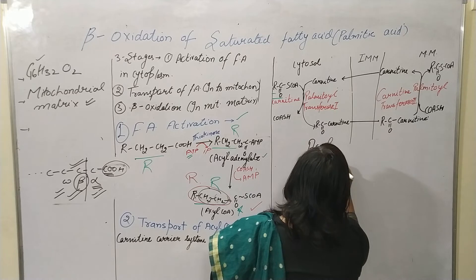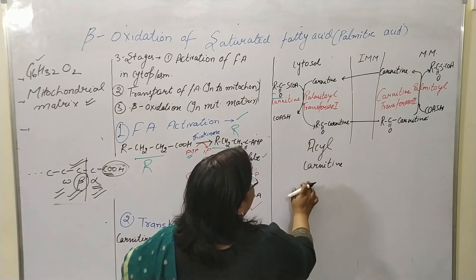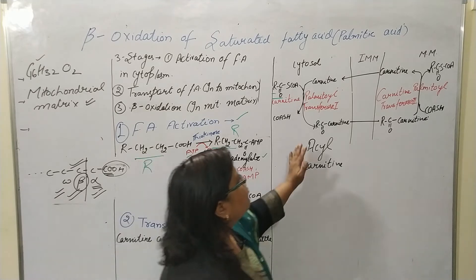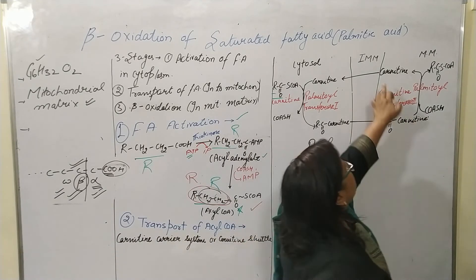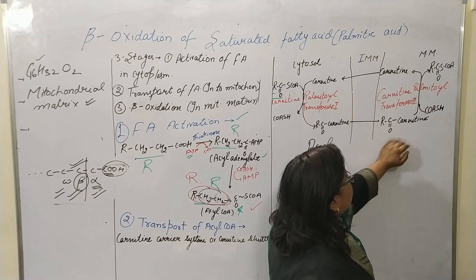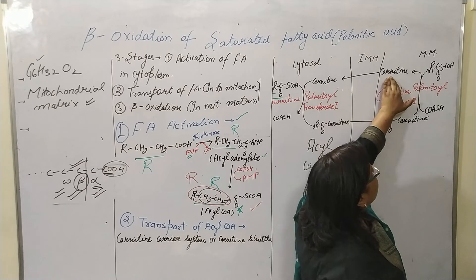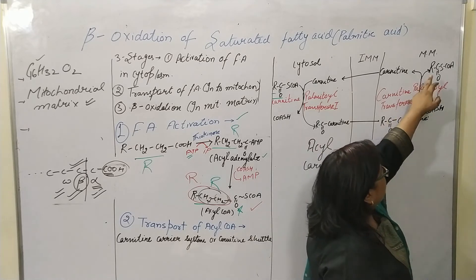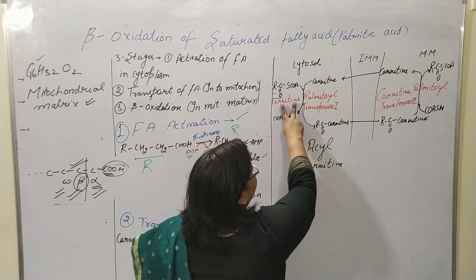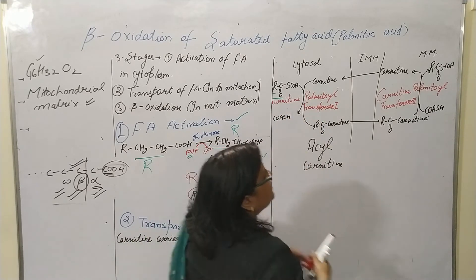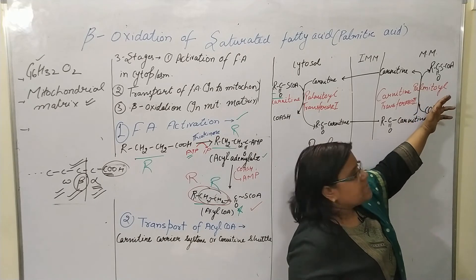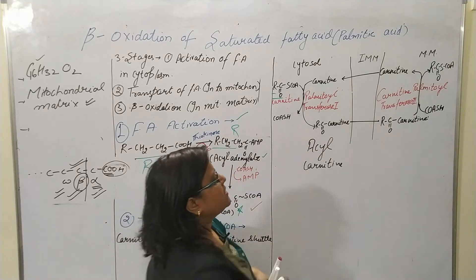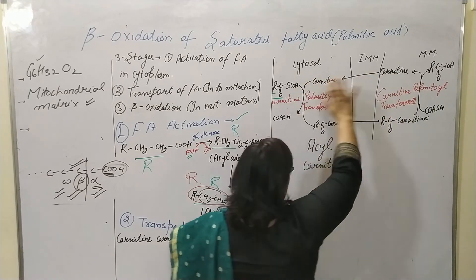The acyl carnitine is easily permeable to the inner mitochondrial membrane and reaches the mitochondrial matrix. There, it converts back: acyl carnitine releases its acyl coenzyme A — this conversion is facilitated by carnitine palmitoyl transferase 2 (CPT2). The free carnitine is then released back into the cytosol.